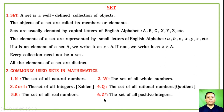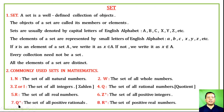The set of all positive integers is denoted by Z-plus. The set of all positive rationals is denoted by Q-plus. The set of positive real numbers is denoted by R-plus. Similarly, negative variants use the negative superscript.